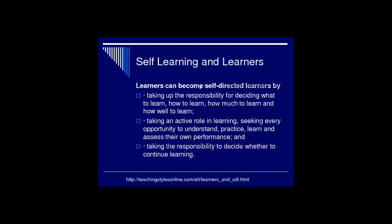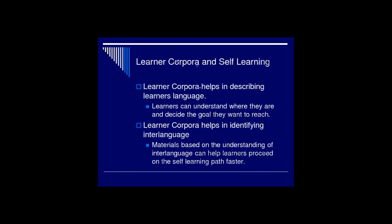Self-learning and learners — what are learners supposed to do in self-learning? They have to take up the responsibility for deciding what to learn, how to learn, how much to learn, and how well to learn. Some learners may think that if they learn 50 percent, that's fine — they don't want to get 90 or 100 percent. So they may stop learning there. They take the responsibility and decide how much and how well to learn.